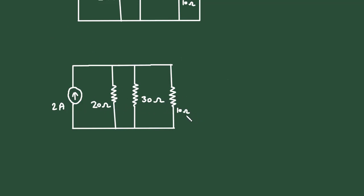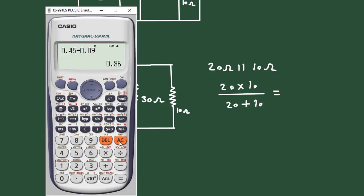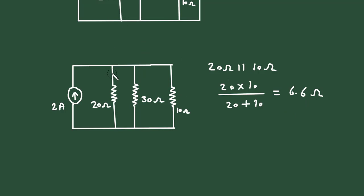Here we can see this 20 ohm and this 10 ohm are connected in parallel. We will keep the 30 ohm as it is and solve only for 20 ohm parallel with 10 ohm. So it will be 20 multiplied by 10 divided by 20 plus 10, which gives 6.6 ohm.